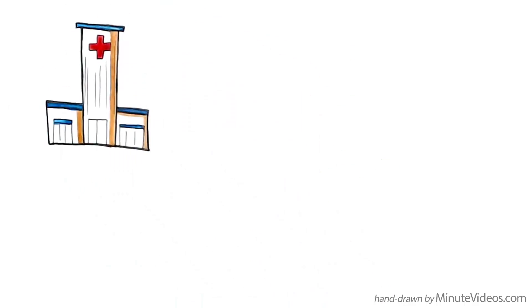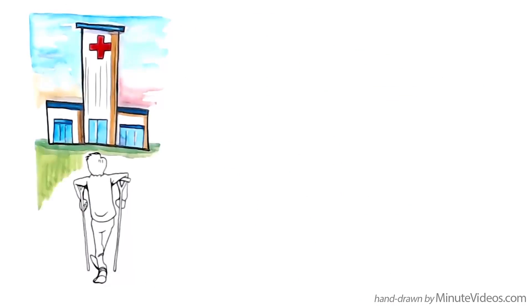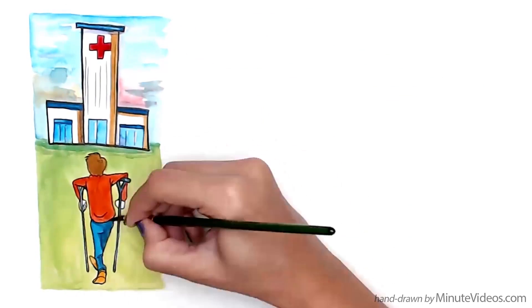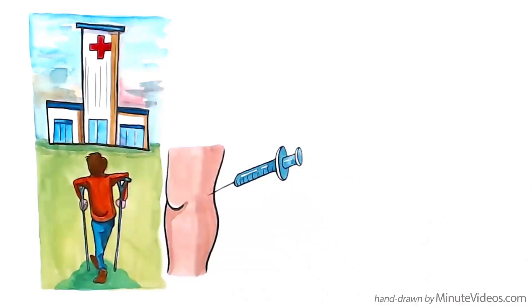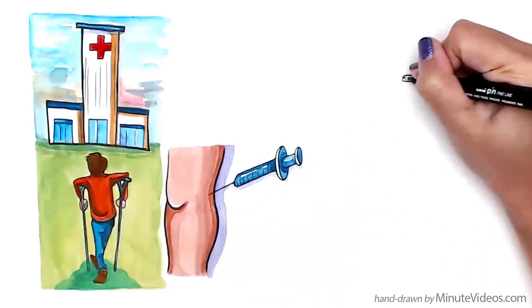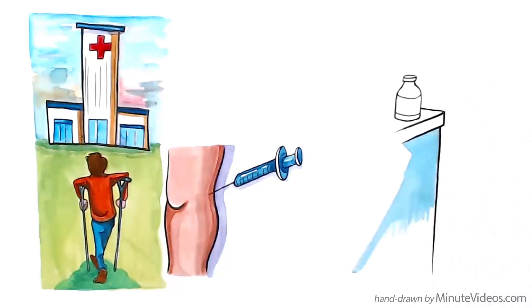Medical interventions are also an option if the cartilage is completely eroded and the joint's bones are rubbing together. Anti-inflammatory hormones like cortisone can be injected to reduce the pain temporarily, but they make arthritis worse over time.